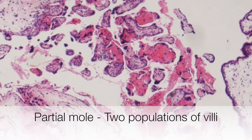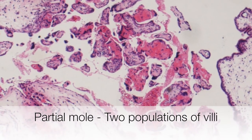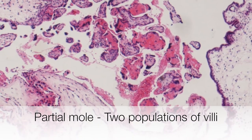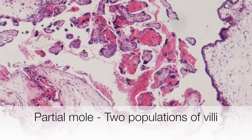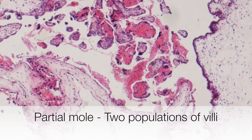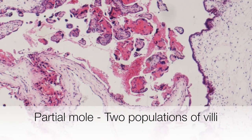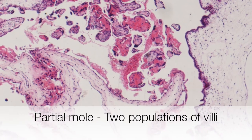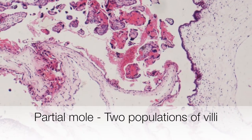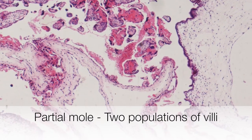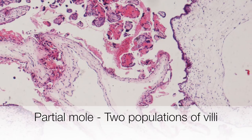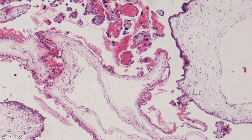This is a typical low-power view of a partial hydatidiform mole. At the top of the picture are normal-sized and in areas fibrous villi, and at the bottom and on the right are markedly enlarged hydropic villi.